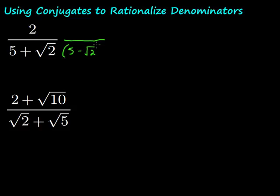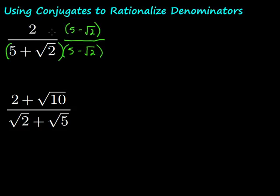We want to put this in parentheses because we're going to have to FOIL to do that simplification. Also, if we do it on the bottom, we have to do it on the top, because really what we're doing is creatively writing 1 — this is just 1. We're not changing the value of the fraction; we're just writing it in a different way and getting rid of those square roots on the bottom.